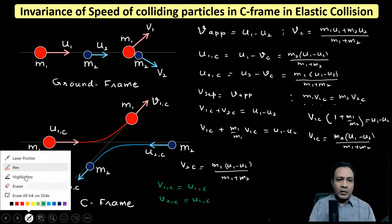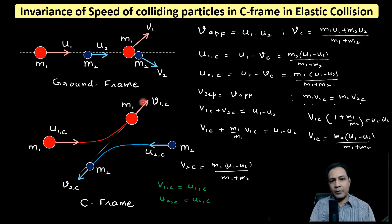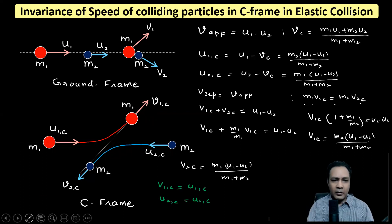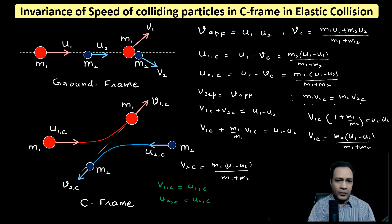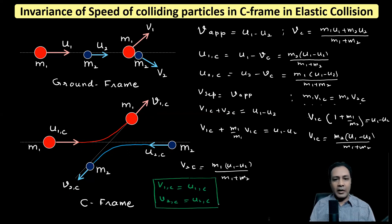So the speed of the colliding particles has not changed — it is still the same in the C frame for elastic collision. The only thing that has happened is that they have rotated, and how much they rotate depends on the relative masses and the line of impact. This is a powerful result. Based on this, I'll come with another powerful result: the relationship between the angle of scattering in the C frame and the lab frame — a question that was also asked in the Olympiad. Thank you.